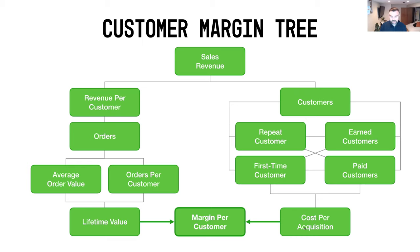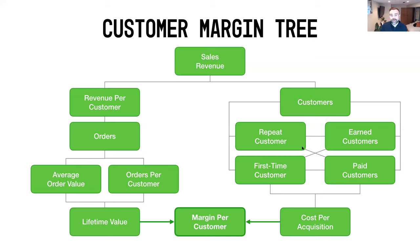That cost is what we call and define as your cost per acquisition. You take your lifetime value minus your cost per acquisition and you get your margin per customer. That's what we went over yesterday in our customer margin tree. There was some feedback that there was maybe a little bit of confusion there, so we're going to try to make this as clear as possible over the next couple of days.